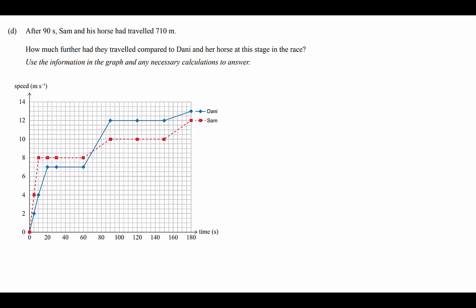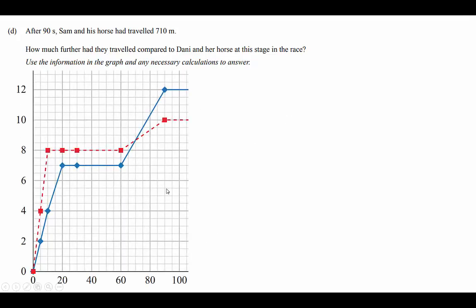Okay on to part D. So after 90 seconds Sam and his horse have traveled 710 meters. How much further had they traveled compared to Danny and her horse at this stage in the race? Okay so we're looking at 90 seconds here and we know the distance traveled by Sam and his horse. We're trying to work out then the distance traveled by Danny and her horse so that we can compare the two values. Because we're dealing with a speed time graph, the way that we work out distance traveled is using the area under the graph. So I'm just going to zoom in on that chart now, this allows us to focus a little bit more closely on the areas we're interested in.